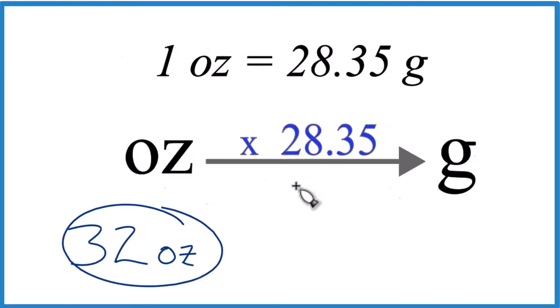So if you have 32 ounces and you want to know how many grams that is, here's how you can figure it out.